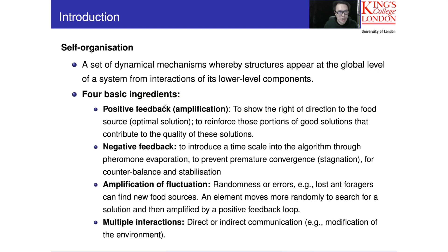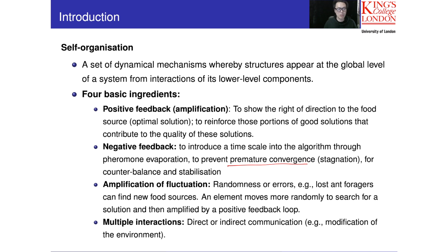There are four basic ingredients — I won't go into detail again; please refer to ant colony optimization. Briefly: positive feedback gives a reward to the right move, negative feedback prevents premature convergence, meaning we balance exploitation and exploration. Using positive and negative feedback, we also introduce randomness into the system to make a better balance, as well as interaction.